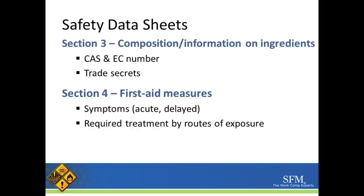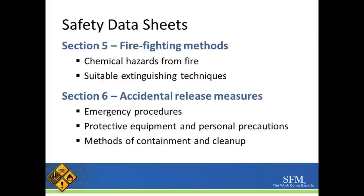The third section is the composition information on ingredients. Section four is the first aid measures, which would include symptoms and the required treatment by different routes of exposure. Section five is the firefighting methods — the chemical hazards from a fire and how to extinguish a fire resulting from that chemical use.